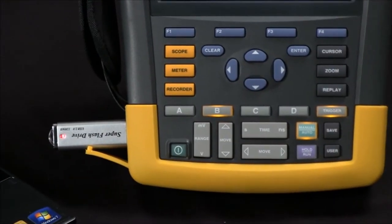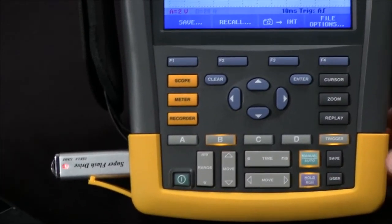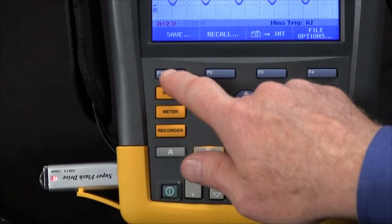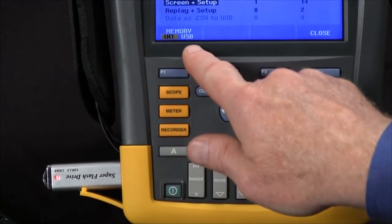Once the memory stick is installed, we simply hit the Save button, hit F1 for Save, and select F1 to change from internal memory to USB.